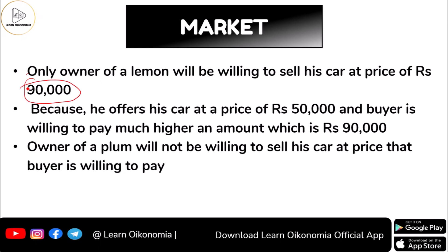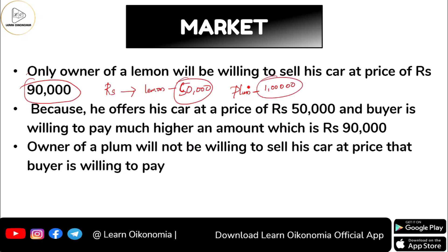At ₹90,000, only the owner of a lemon would be willing to sell his car, because the minimum price he requires is ₹50,000, and ₹90,000 exceeds that. However, the owner of a plum will not sell at ₹90,000, because the plum seller requires at least ₹1,00,000, and ₹90,000 is less than ₹1,00,000.